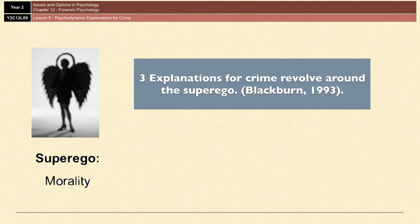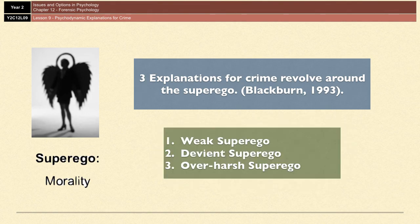According to Blackburn in 1993, there are actually three explanations for how a superego can lead you to criminal behavior, and they all focus around the idea that your superego is either deficient or underdeveloped. This means that the id would have free reign to do whatever it wants because it isn't being suppressed by the superego. The three things that could become an issue are having a weak superego, having a deviant superego, or having an over-harsh superego.